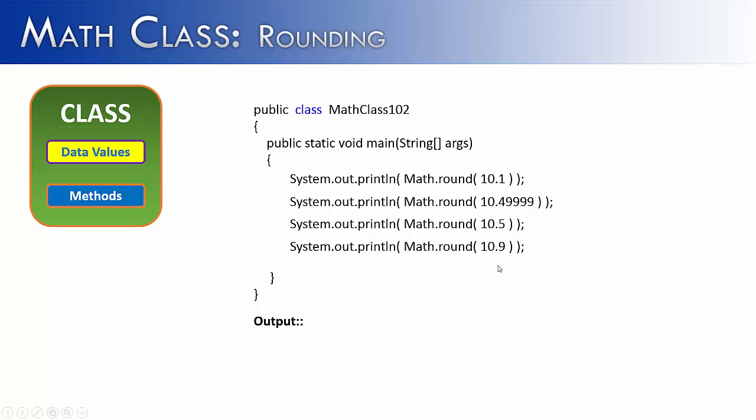10.5, and 10.9. So we see the values at 10.5 and above will round up to 11, and the values 10.1 and 10.4999 will round down.